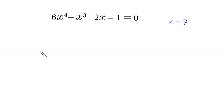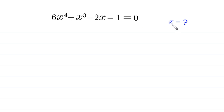Hello everyone, you are welcome. We will solve this very nice quartic equation: 6x⁴ + x³ - 2x - 1 = 0. Our job is to find all possible values of x.